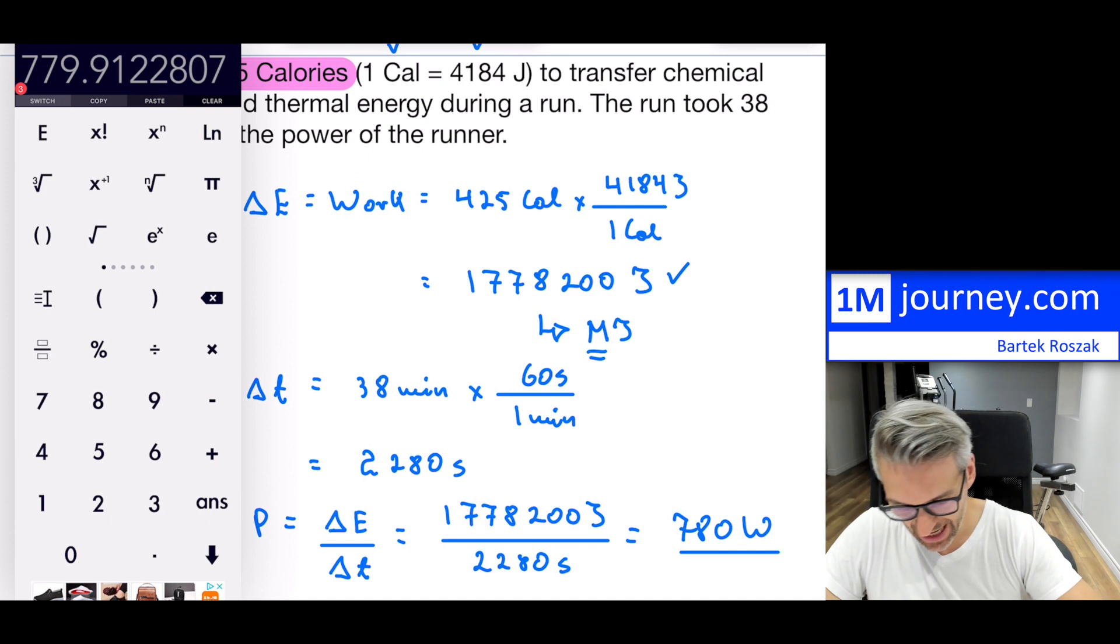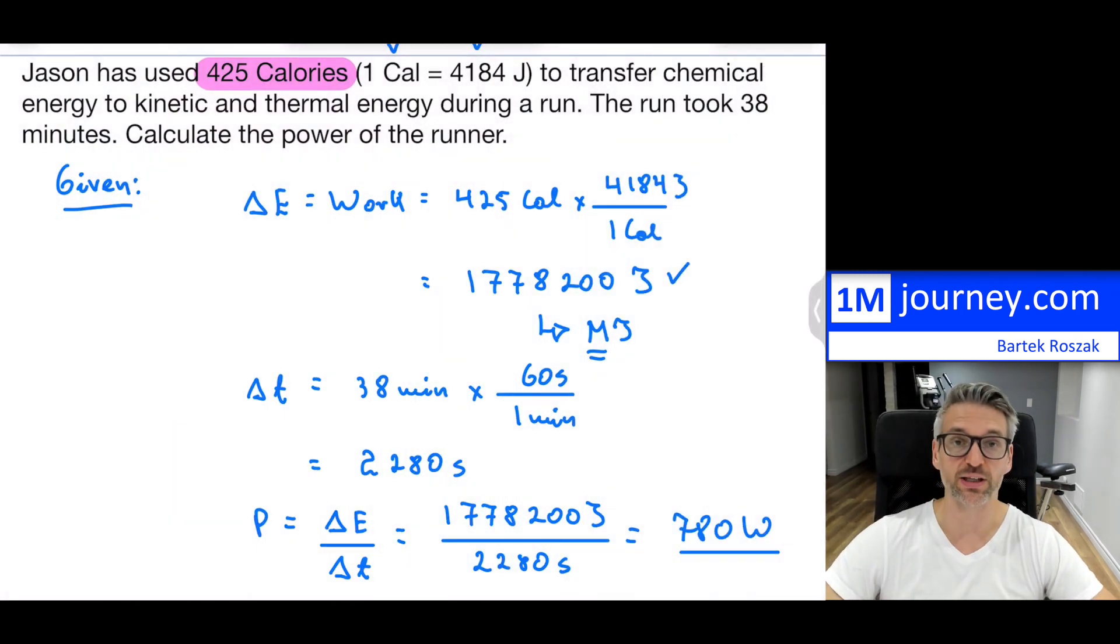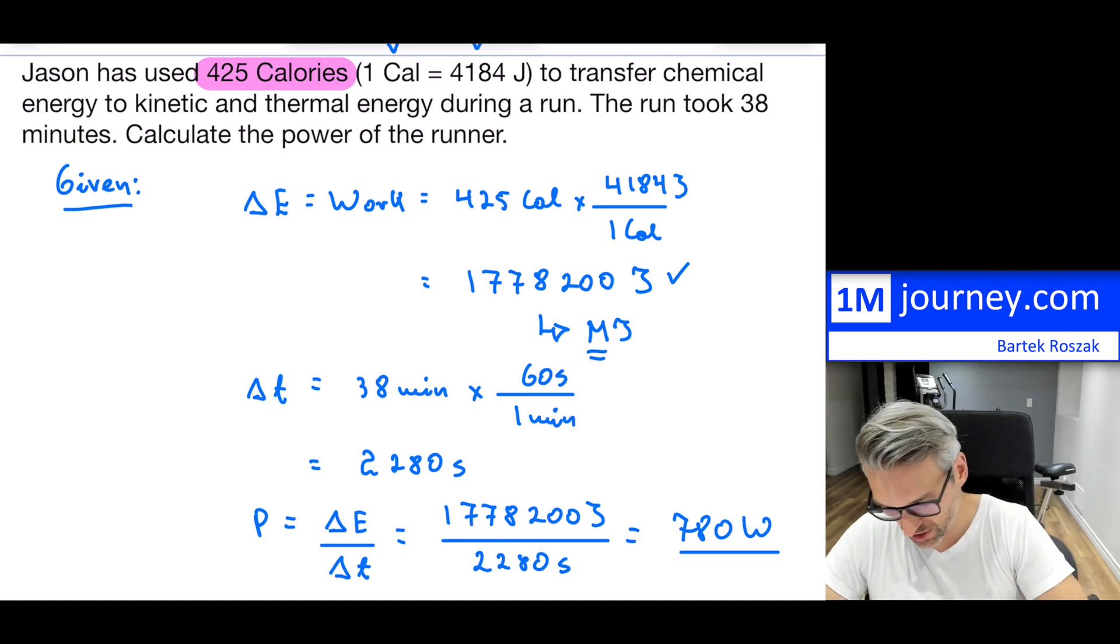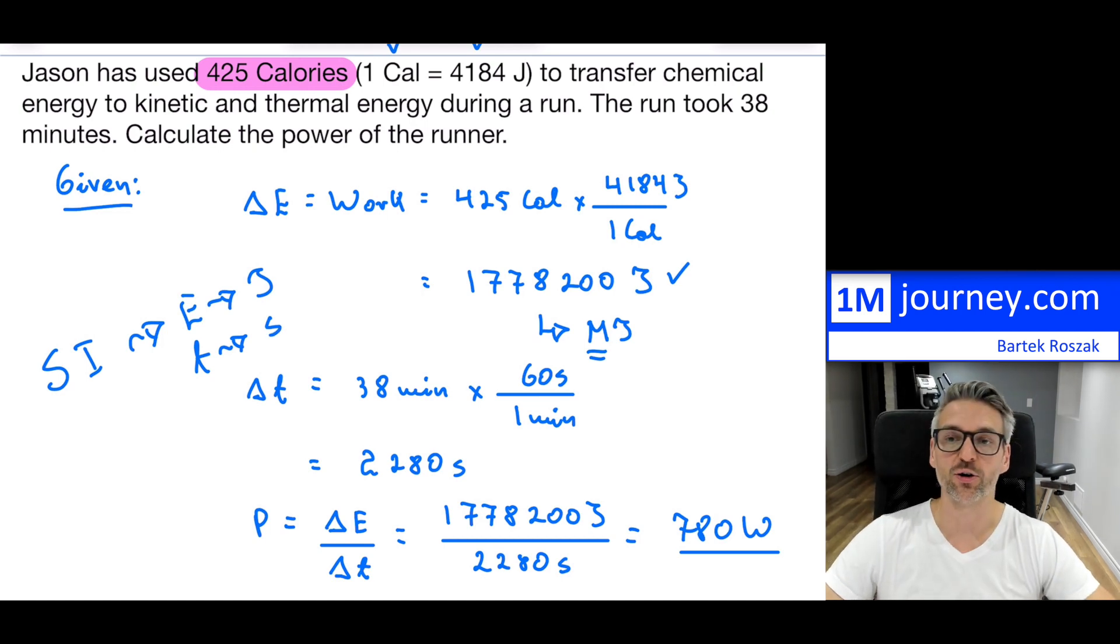So every second that passes by, the runner is gonna be using that much or doing that much work or transferring that much energy. That's the calculation. This one, if it wasn't for the unit conversions, would have been rather simple. But I like the unit conversions because it forces you to think to put things back into standard units. Do not forget SI standard units.